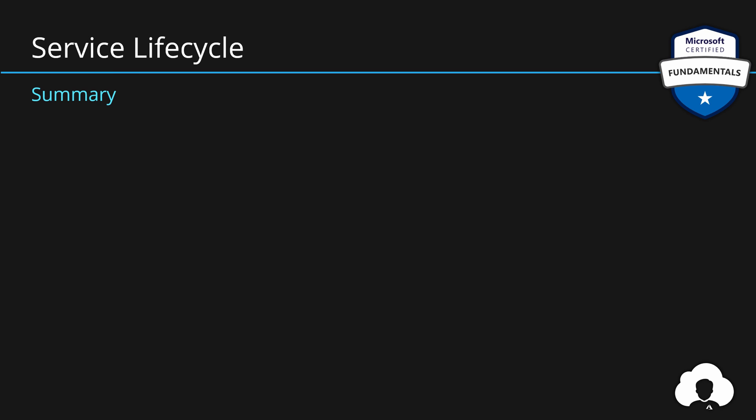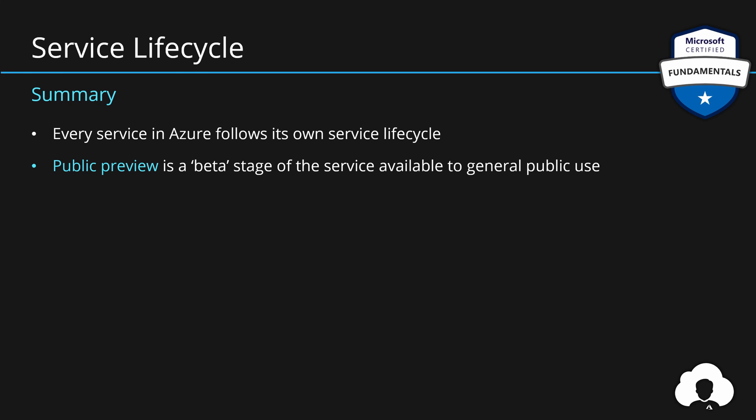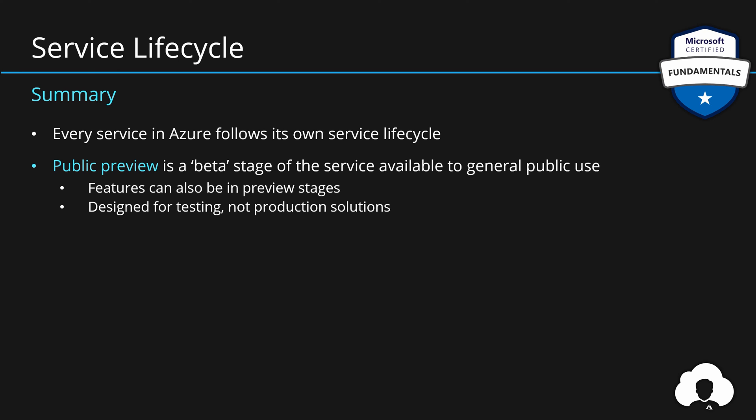To summarize the service lifecycle: remember that every service in Azure has its own lifecycle, and every service feature can also follow a separate lifecycle. The first stage is called public preview — this is a beta stage for your Azure service released to the general public. Remember that certain features can be in preview stages even if the service has been in general availability for a very long time. This stage is designed for testing, not for production scenarios. The other stage is called general availability, which is a production release of the service — meaning the service has all the functionality Microsoft wanted it to have and you can use it for your applications.